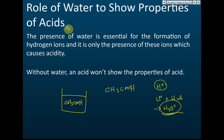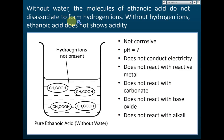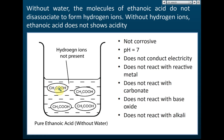So the role of water is to allow the acid to show its properties. Without water, the molecules of ethanoic acid do not dissociate to form hydrogen ions. Inside pure ethanoic acid, there are only ethanoic acid molecules — no hydrogen ions. Since there are no hydrogen ions, it does not show acidity. This acid is not corrosive, even though acids are usually corrosive.